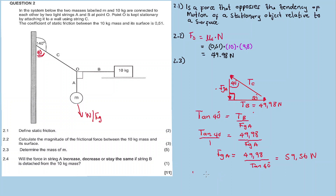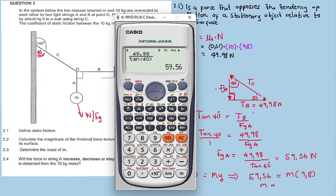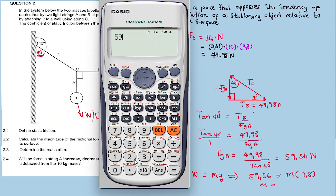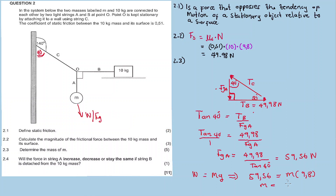So the weight FGA is 59.56 Newtons. Using weight equals mass times gravitational acceleration: 59.56 equals mass times 9.8. Dividing both sides by 9.8 gives mass equals 59.56 divided by 9.8, which equals 6.08 kilograms. This is the mass M.